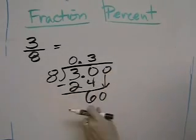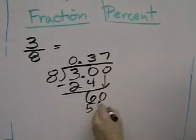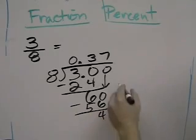Drop a 0, 8 goes into 60, 7 times, that's 56 with 4 left over.